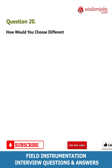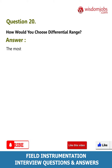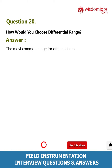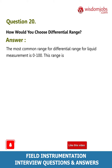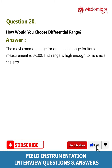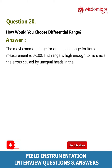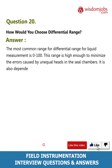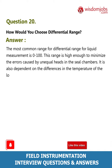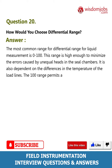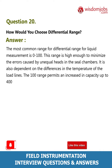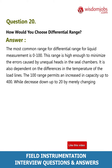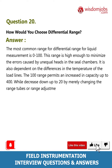Question 20: How would you choose differential range? Answer: The most common range for differential measurement for liquid measurement is 0 to 100. This range is high enough to minimize errors caused by unequal heads in the seal chambers, and is also dependent on differences in the temperature of the lead lines. The 100 range permits an increase in capacity up to 400, while a decrease down to 20, by merely changing the range tubes or range adjustments.